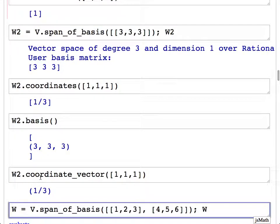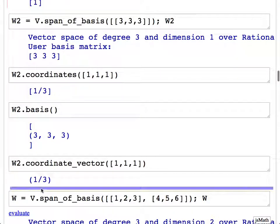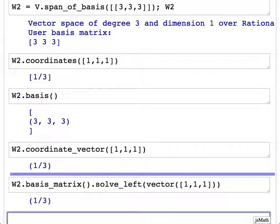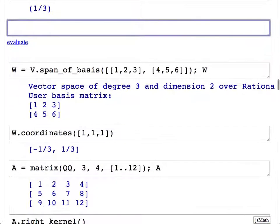You can take that list and ask for the vector version of it, but it's nice to have coordinate_vector directly. What this is doing is solving a linear system. This is really solving w2.basis_matrix().solve_left() with the vector [1,1,1]. That's what's happening behind the scenes. But it's nice that you can just conceptually do things this way.